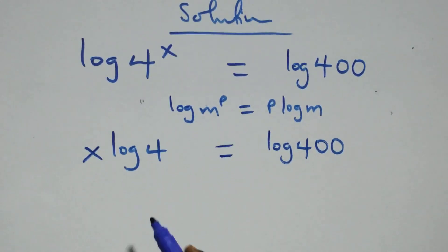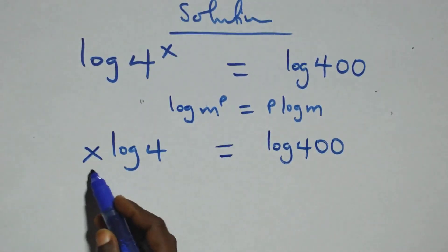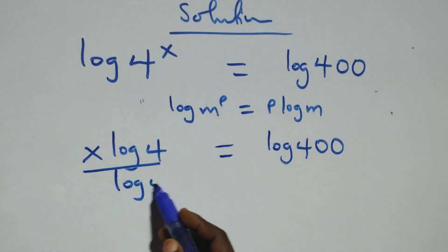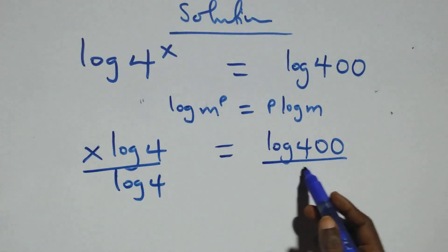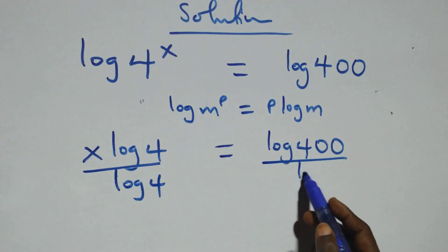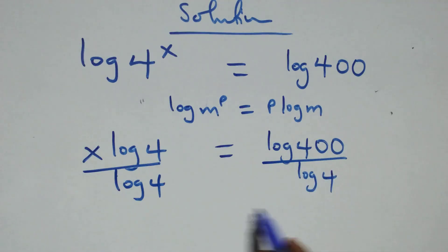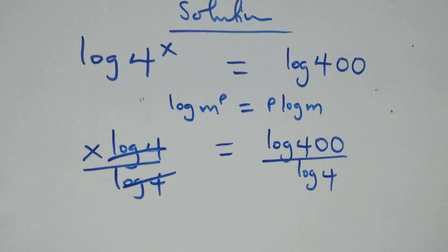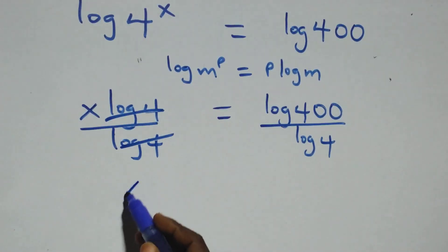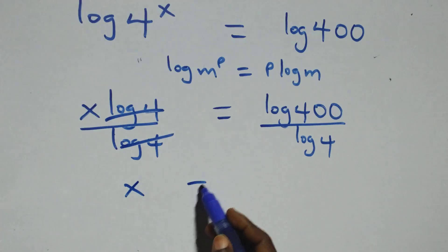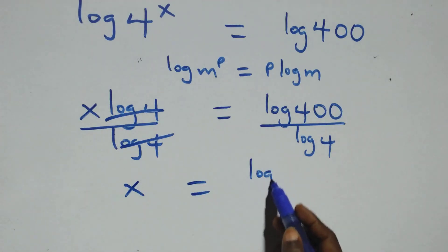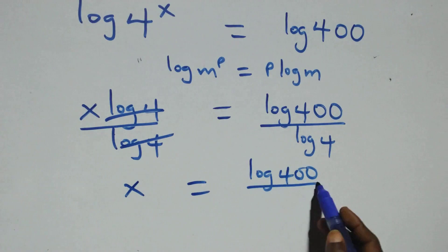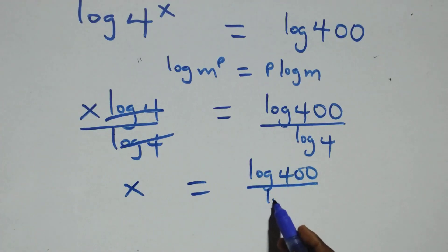The next step: we divide both sides by log 4. We divide this side by log 4 and also divide the other side by log 4. The log 4 cancels each other, and we have x equals log 400 over log 4.